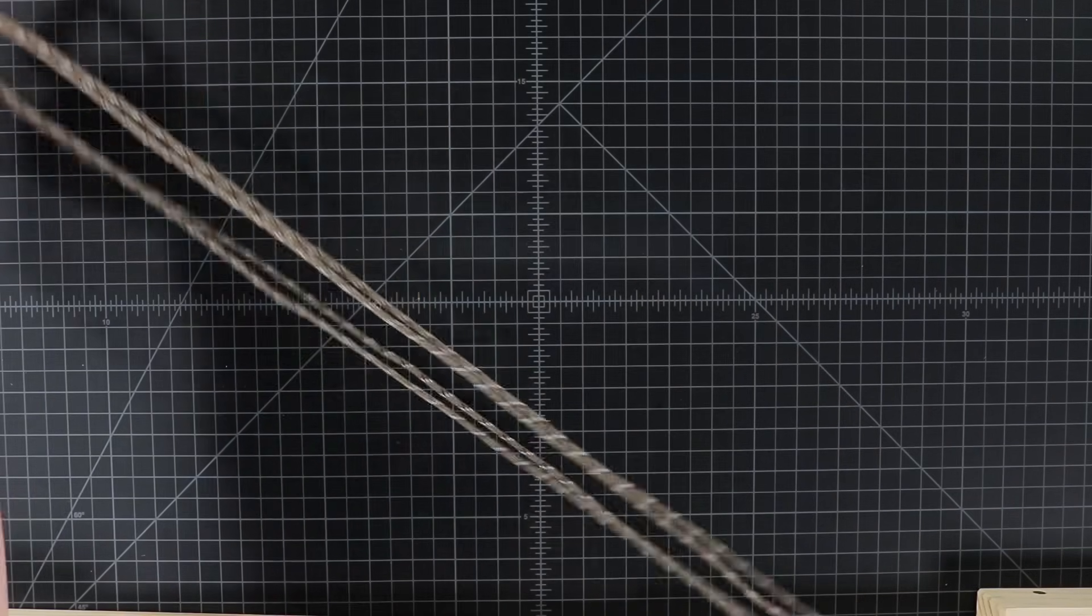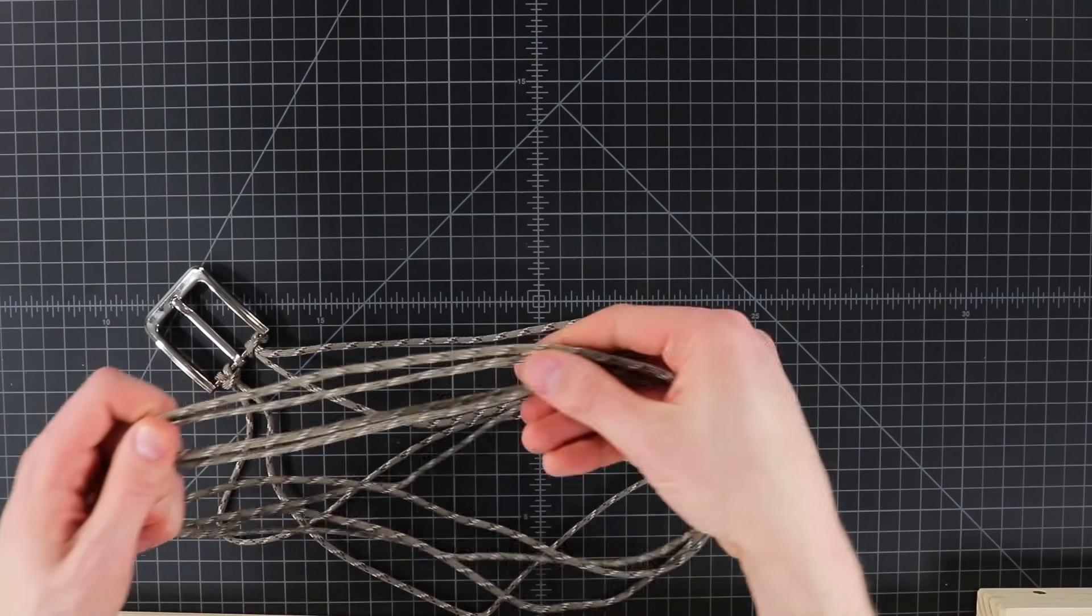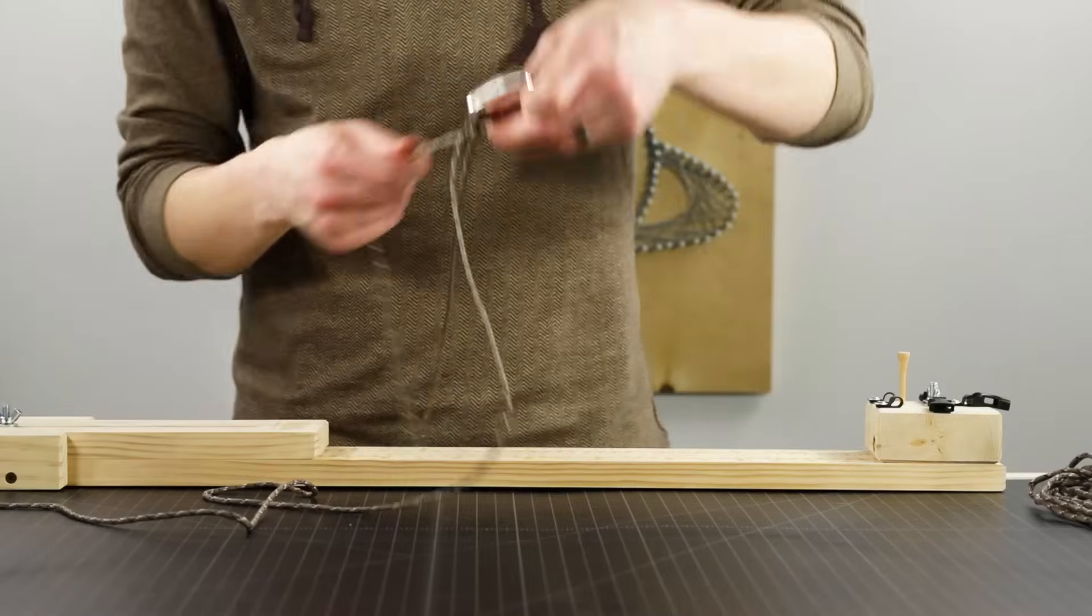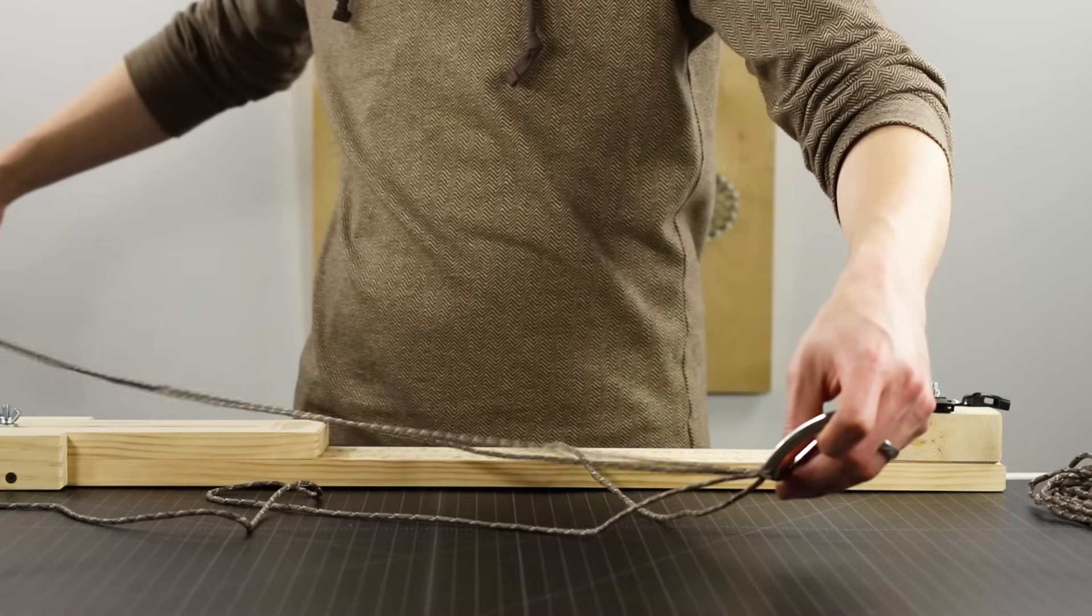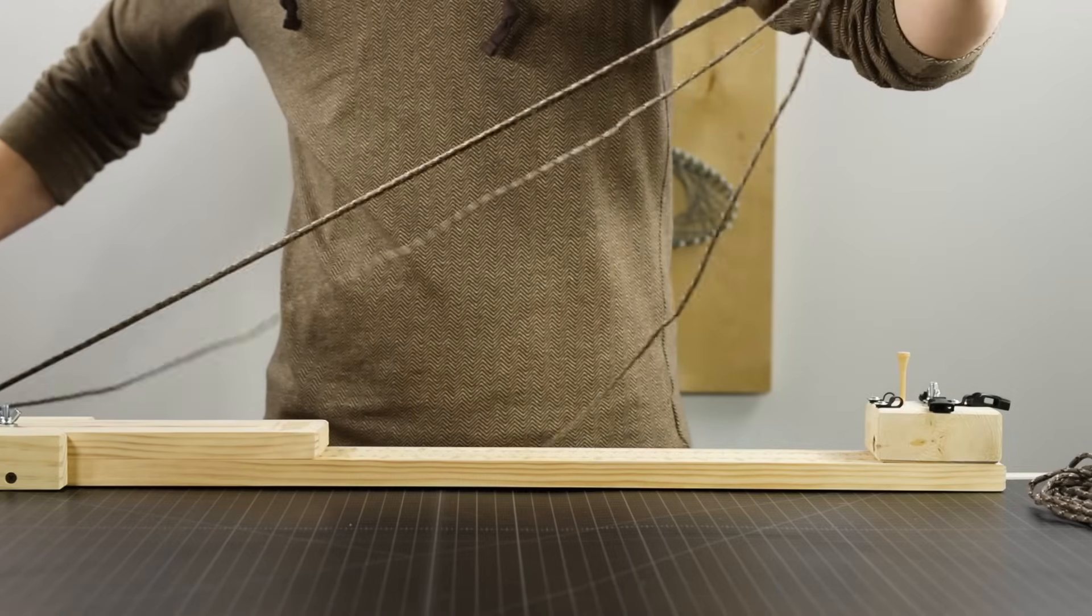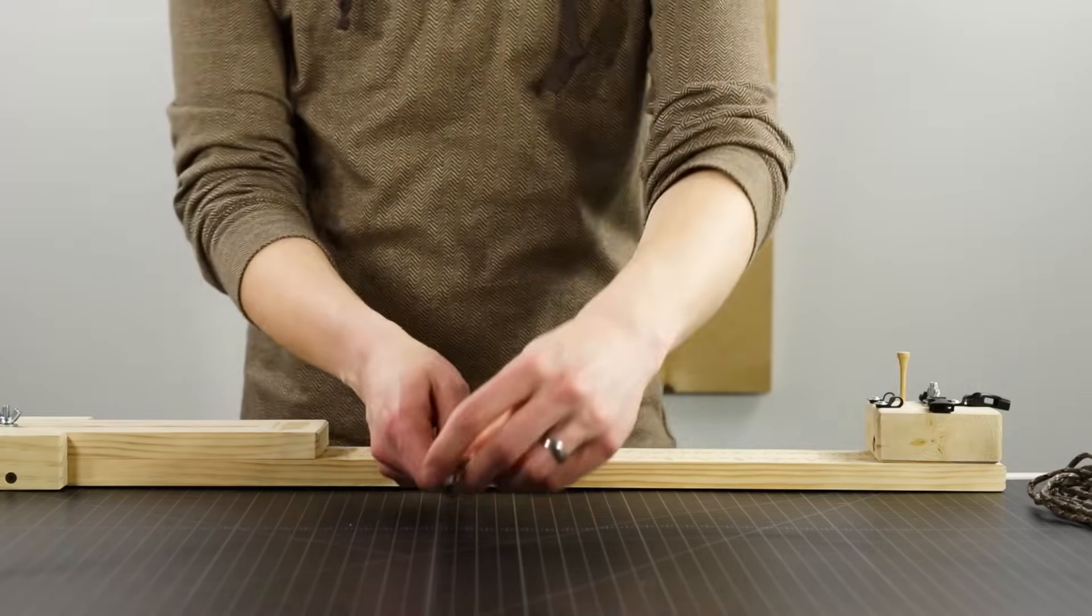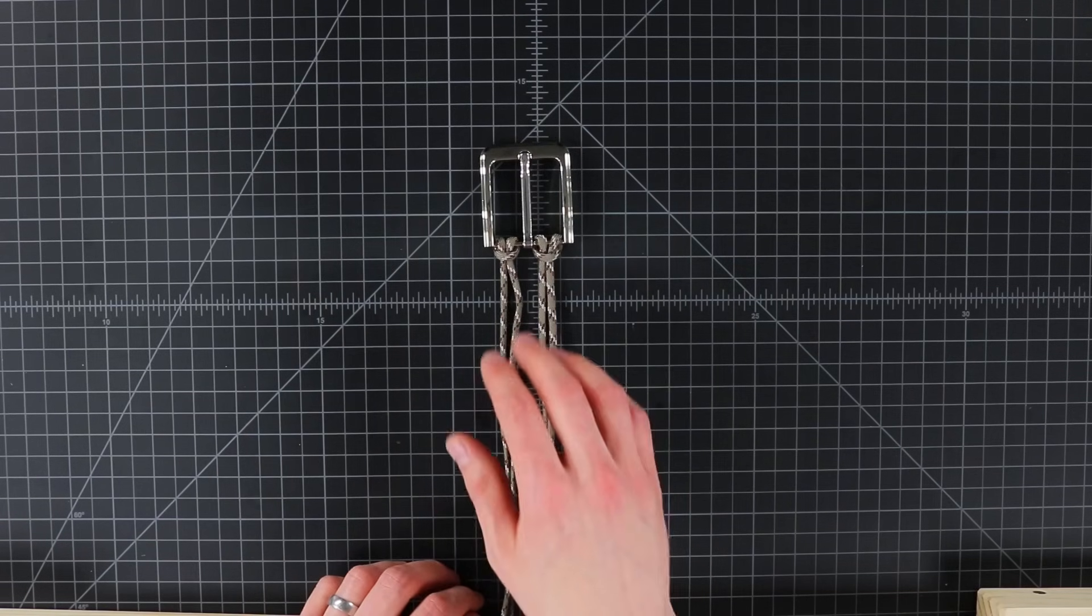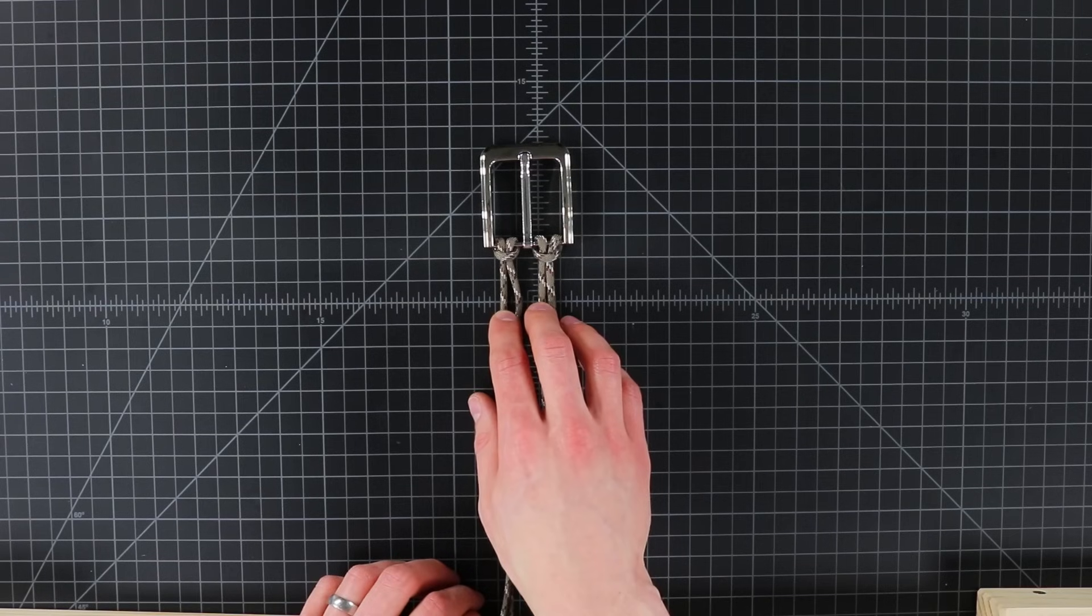On these you want to make sure that your ends are fairly even. I'm a little bit off on one of those. Since these are the core strands you won't be weaving them at all. We're gonna tie those onto the end of our jig.